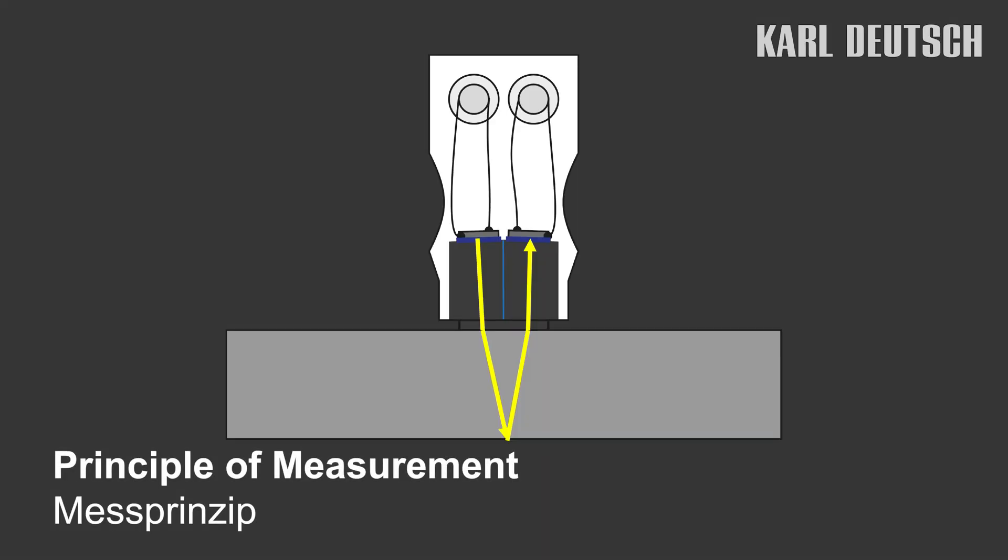The ECHOMETER works by means of an ultrasonic measurement. For the measurement, an ultrasonic probe is placed at the point to be measured. For this purpose, the probe must be coupled with a liquid or a gel.